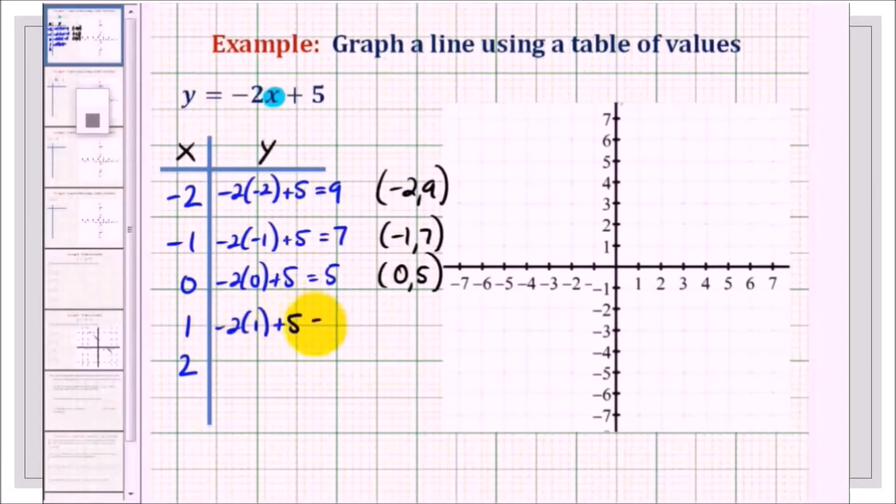Next is 1. Negative 2 times 1 plus 5, that would be 3. So the line also have the point 1, 3. Next, 2. Negative 2 times 2 is negative 4 plus 5, 1. So we have also the point 2, 1.